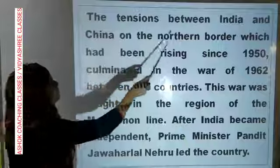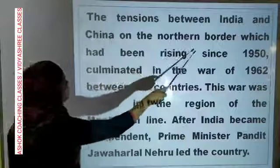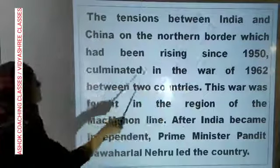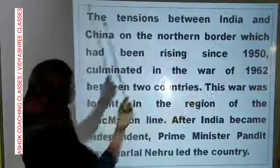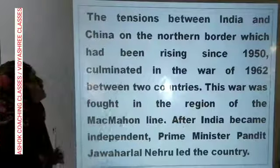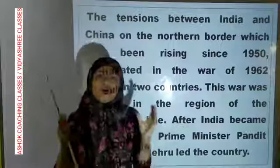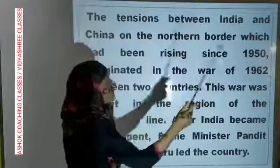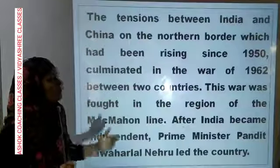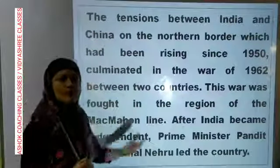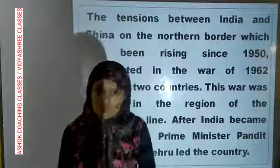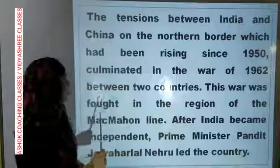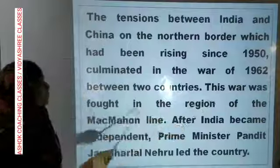The tensions between India and China on the northern border, which had been rising since 1950, culminated in the war of 1962 between the two countries. India aur China ke beech tensions 1950 se rise ho rahe the, jo 1962 mein war mein convert hue. This war was fought in the region of the McMahon Line.